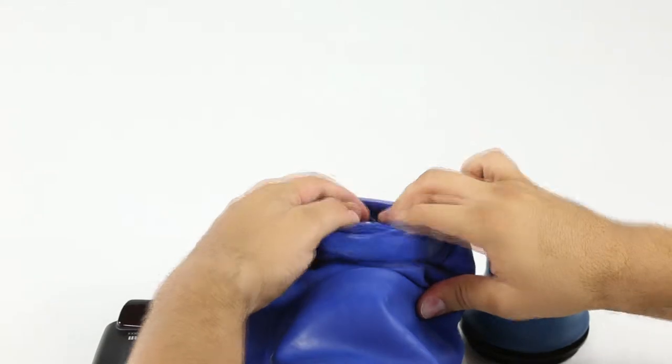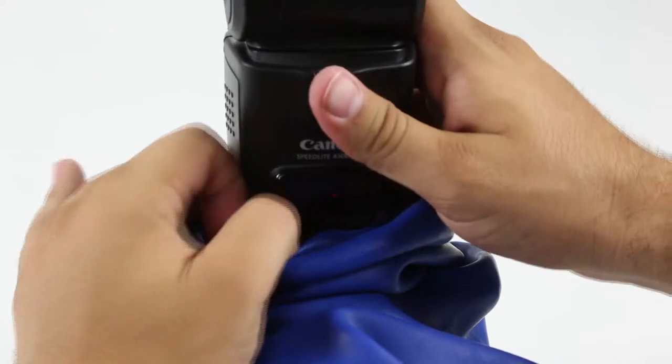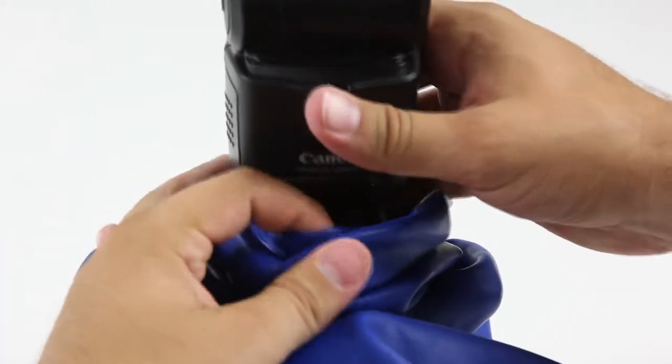Start by rolling down the Outex cover flash sleeve. Open enough space so you can insert the flash into the hot shoe. At this time, turn on the flash and adjust your settings as needed.